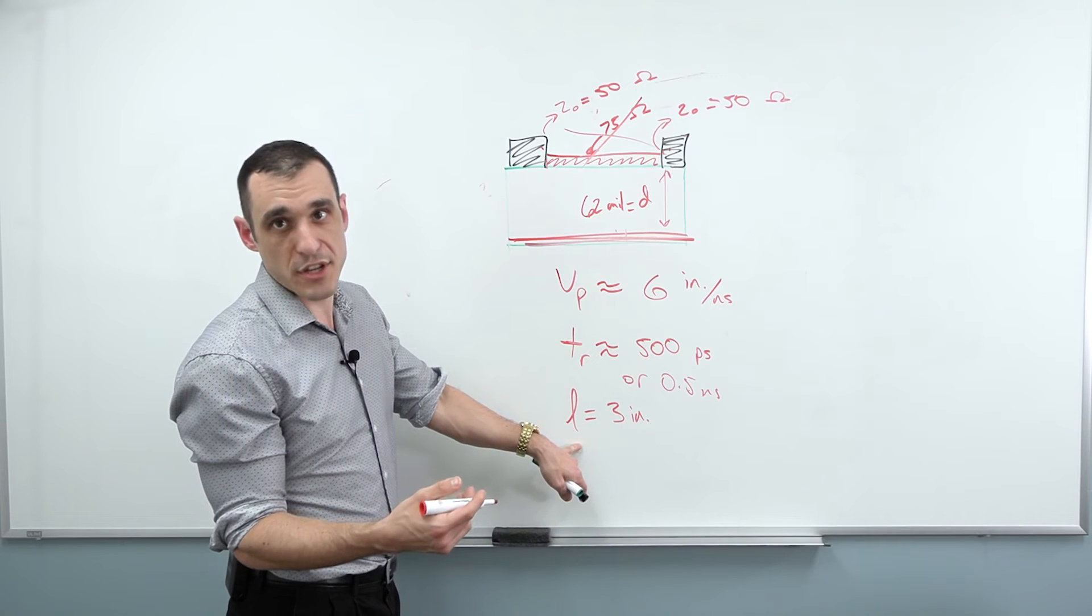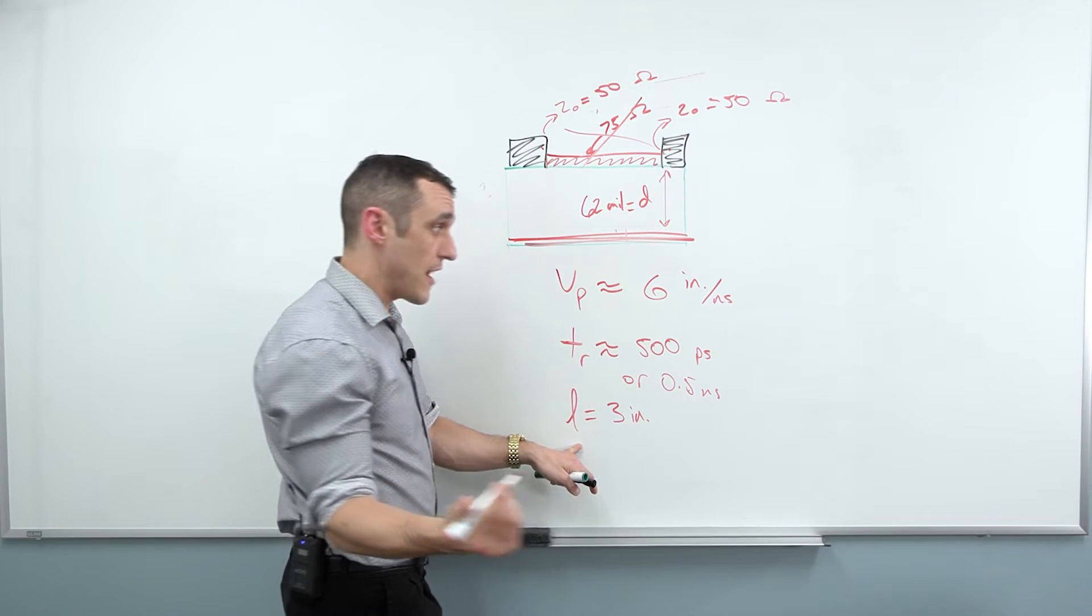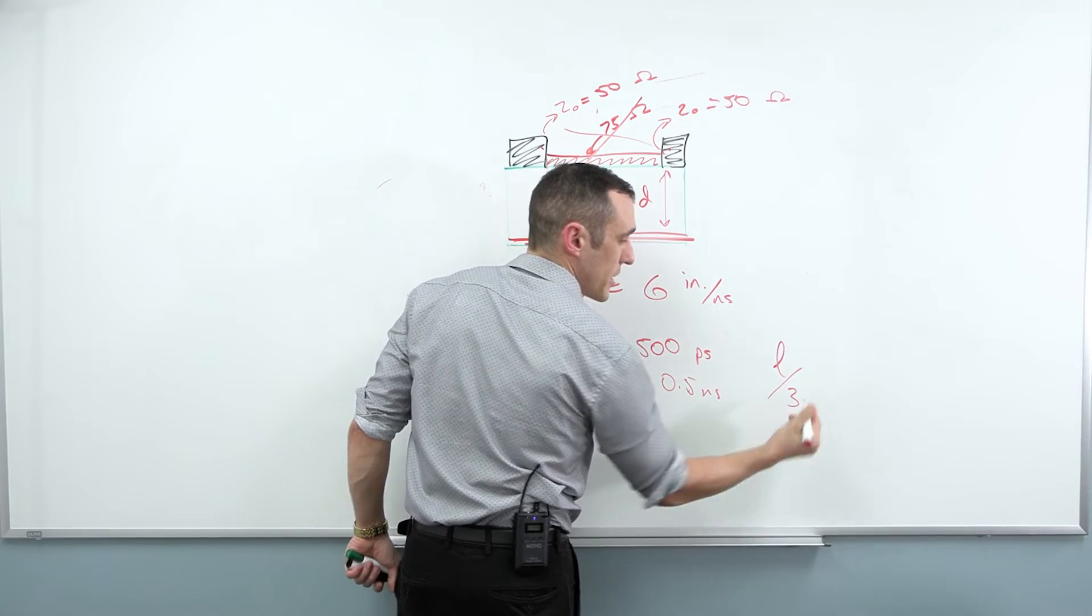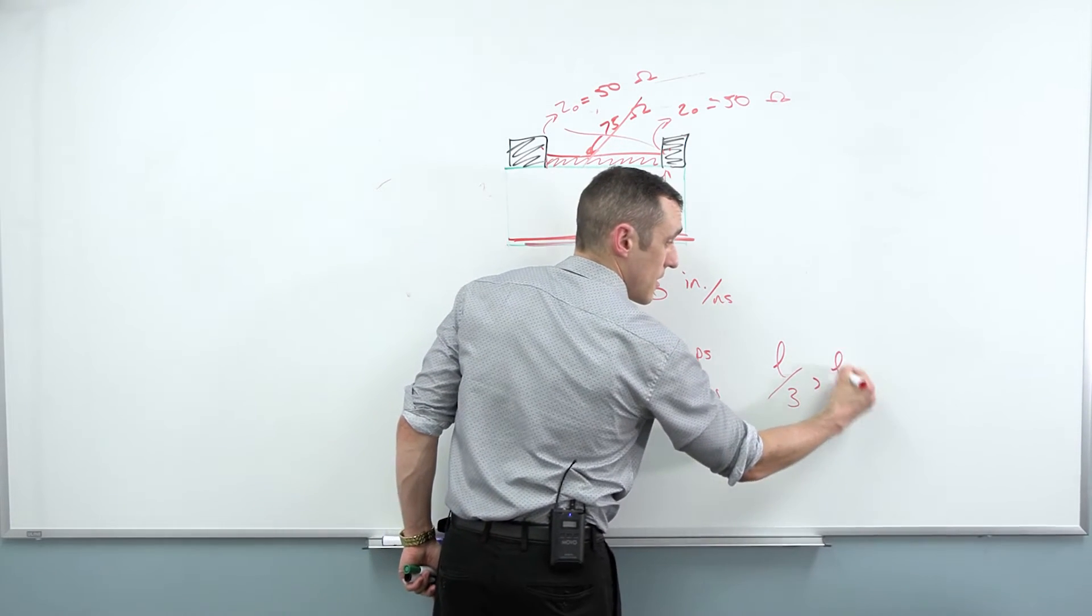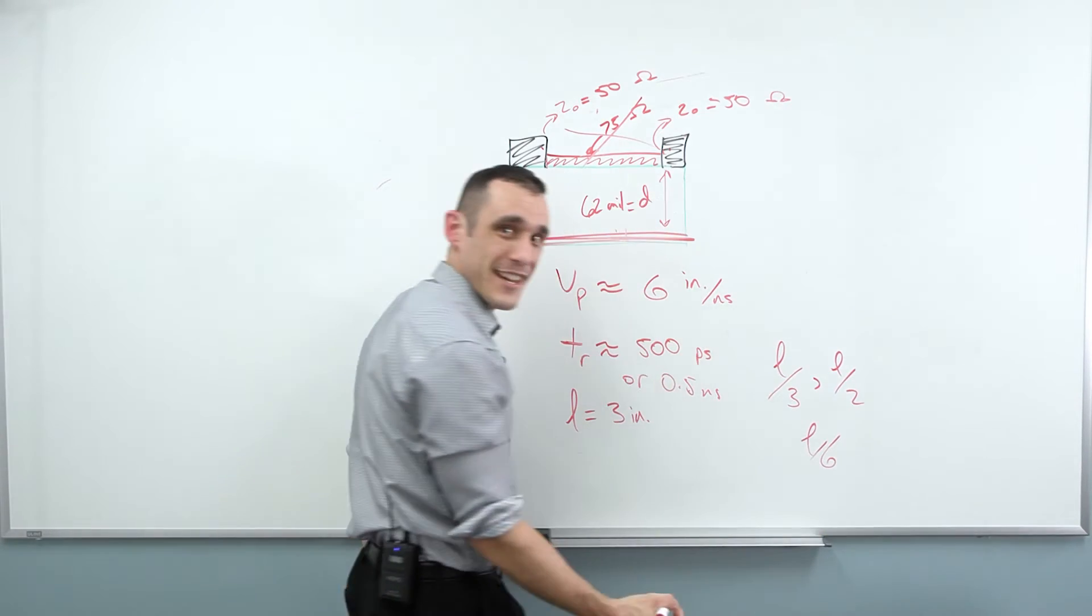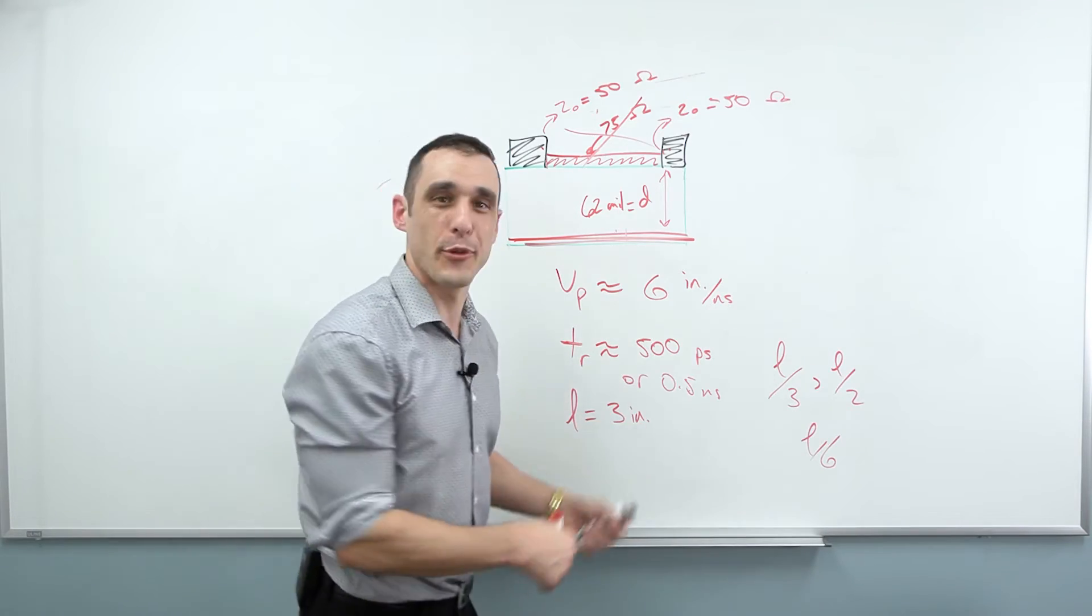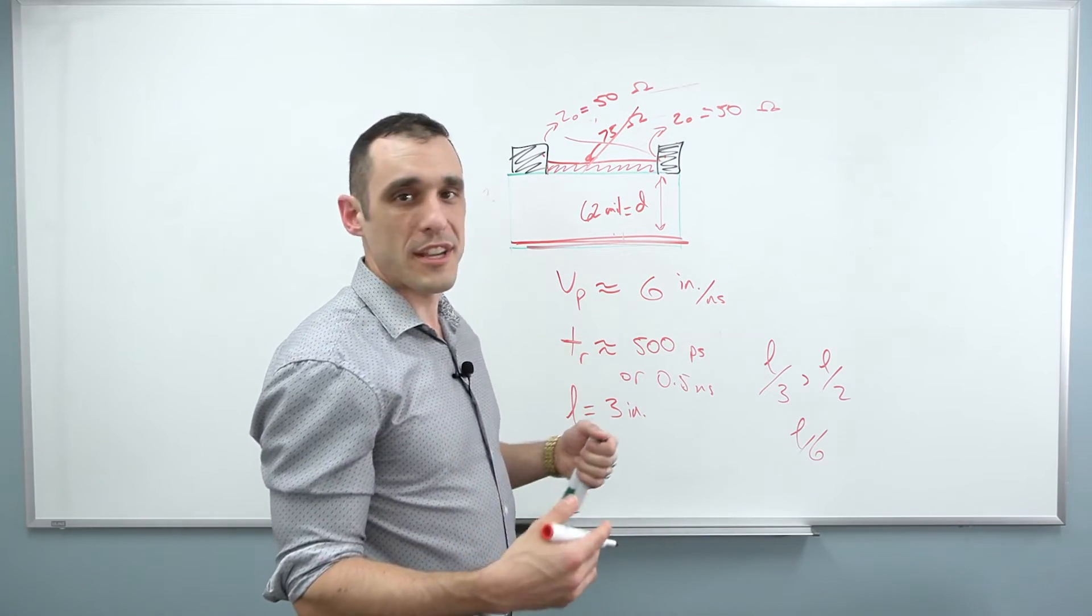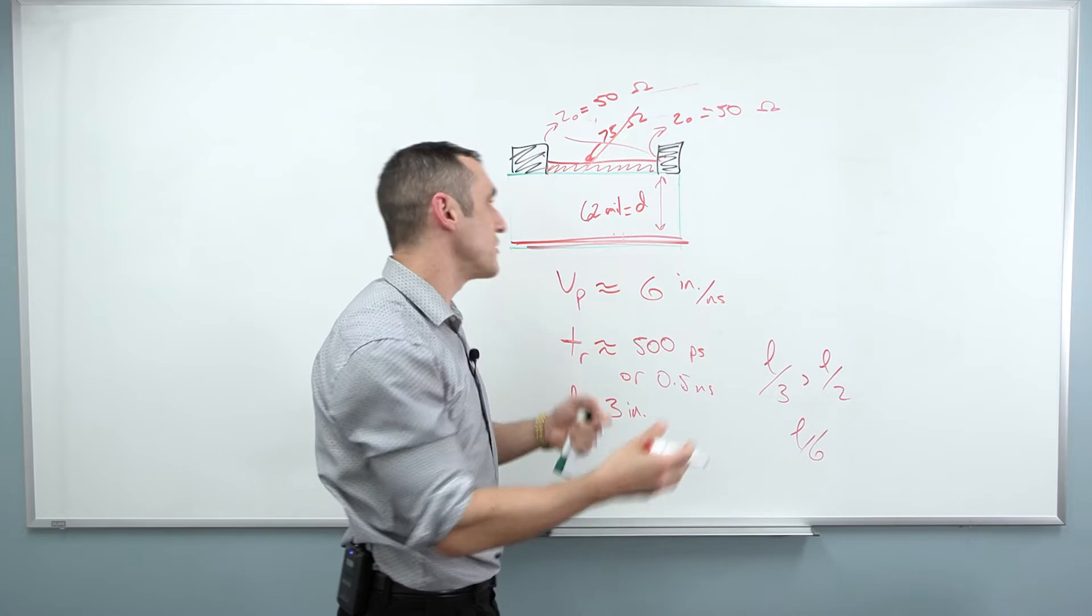This is where you start to see the different recommendations for how long the trace should be. It's gonna be some fraction of this where you should cut this off and keep your length below. What should that value be? So typically what you will see is something like L over three. There's actually one manufacturer that recommends L over two. Other people will recommend L over six and L over eight and L over five and L over four, L over 10. Nobody can agree. Absolutely nobody can agree.